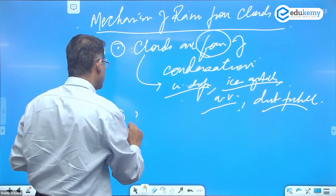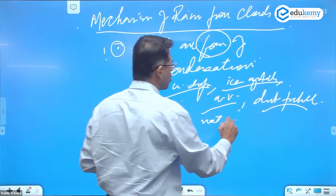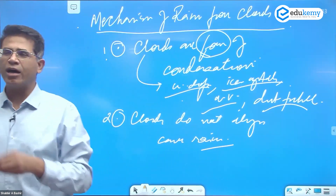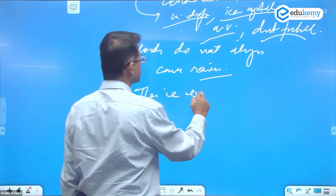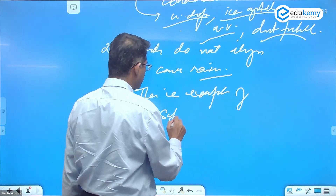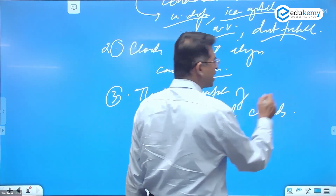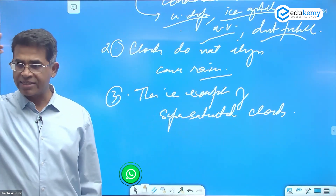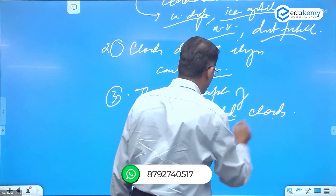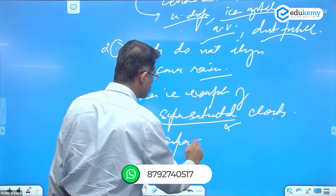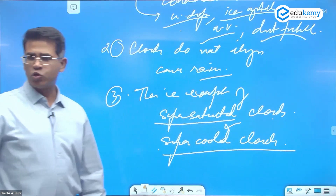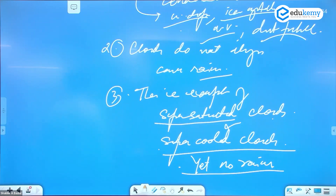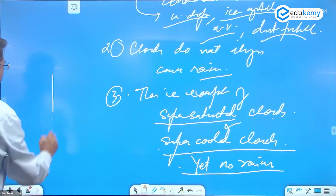Clouds do not always cause rains. There are examples of super-saturated clouds — super-saturated yet no rains. And there are examples of super-cooled clouds — super-cooled yet no rains.